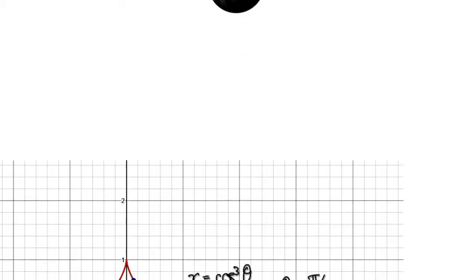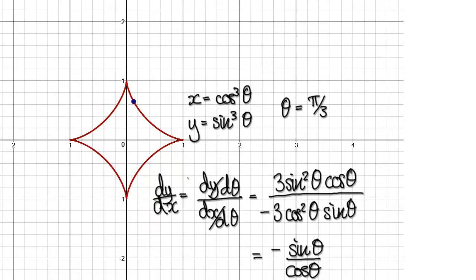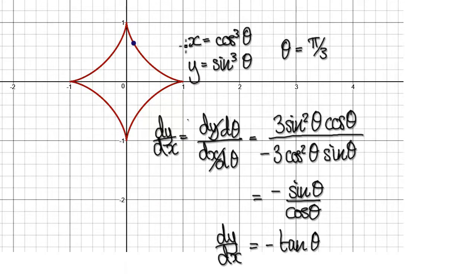In this video, we're going to find the equation of the tangent line on an asteroid. These parametric equations here will generate this asteroid. We want to find the tangent line at precisely this point here, when theta equals pi over 3.